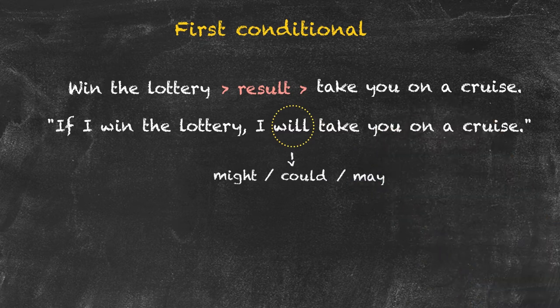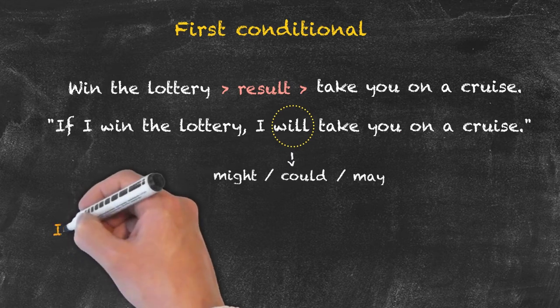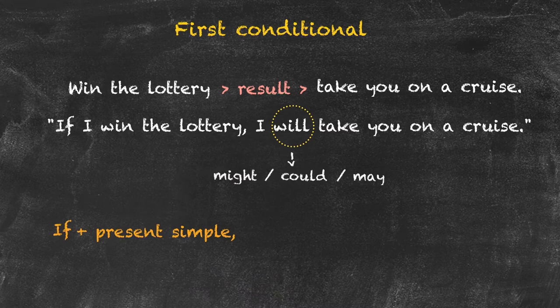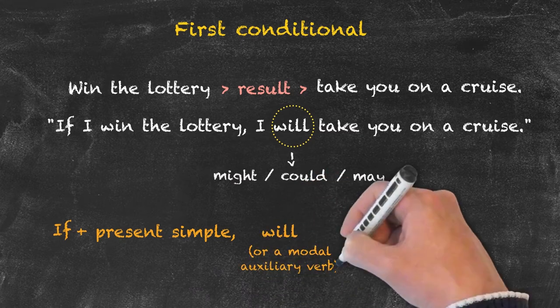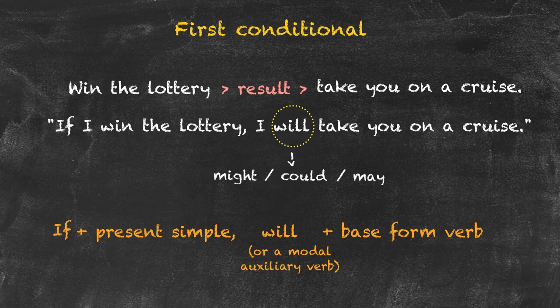So let's first have a look at the structure of this. As with the zero conditional, we have the if, plus the present simple clause. And in the second clause we have will, or another suitable modal auxiliary verb, followed by the base form of the verb. Why do we refer to this as the base form rather than present simple?